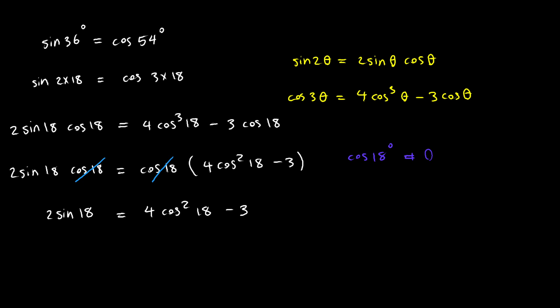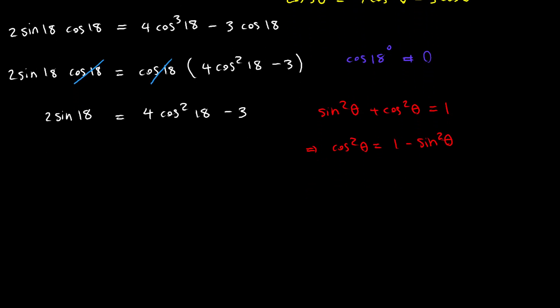Next, I'm going to use the Pythagorean identity to replace cosine squared of 18 with 1 minus sine squared of 18. That way, I will have everything in terms of sine of 18. From the Pythagorean identity, sine squared θ plus cosine squared θ equals 1, so cosine squared θ equals 1 minus sine squared θ.